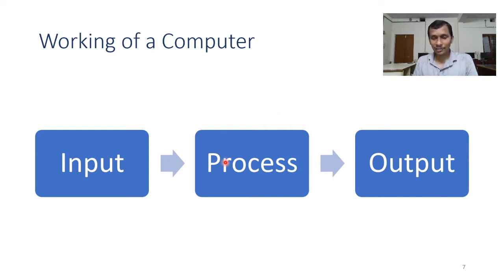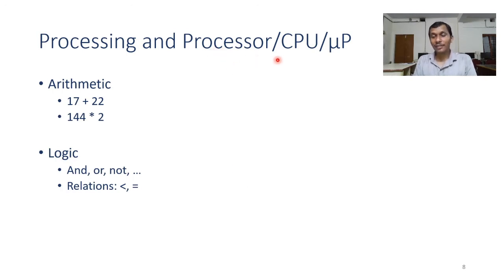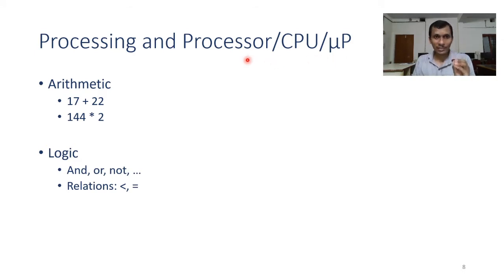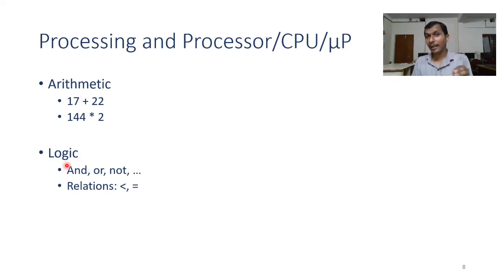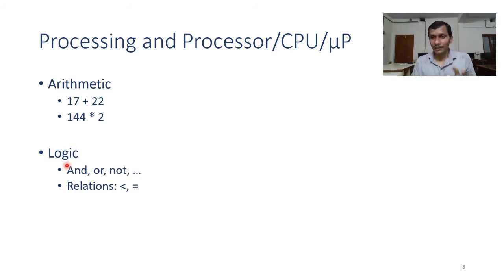How does this processing happen? It is done by the processor — the central processing unit, or microprocessor. I will use these terms interchangeably. This processor is capable of doing two kinds of operations: arithmetic operations such as addition, division, multiplication, and subtraction, and on the other hand, logic operations such as AND, OR, NOT, XOR, and relational operations such as less than, greater than, equal to, and not equal to.